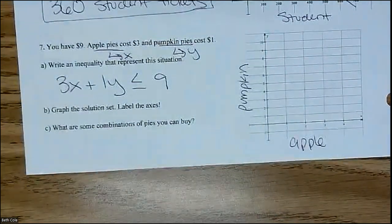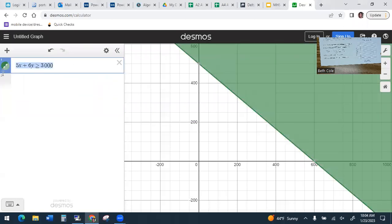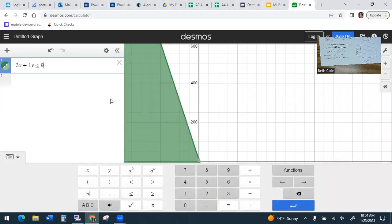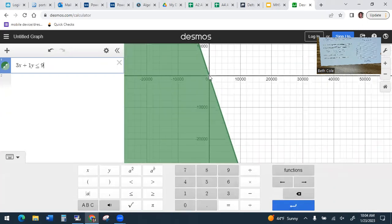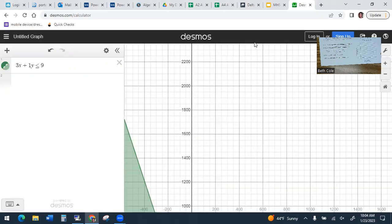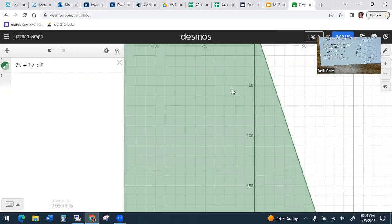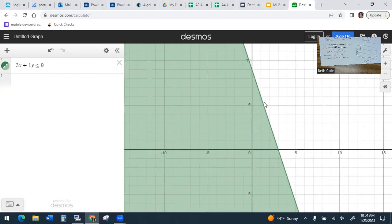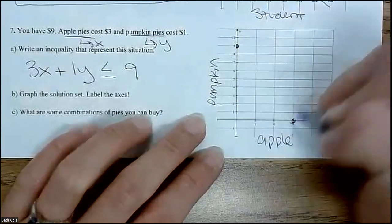I'm going to go to the calculator and type that in. What was it? 3x plus 1y is less than or equal to $9. And I'm going to have to make this a bunch smaller. So you can put a point right here at 0, 9, and then 3, 0. The intercepts are the easiest ones to get. So 0, 9, and 3, 0. It was a solid line. And you would shade underneath.